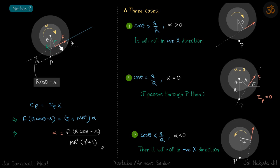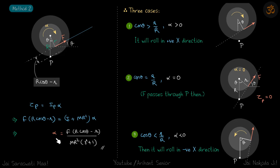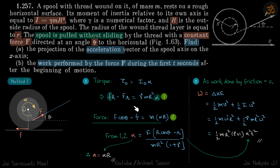Writing the torque equation about point P: force F is at angle theta. Extending the line of action, the perpendicular distance is R·cos(theta) minus small r. So: F·(R·cos(theta) − r) equals I_P·alpha, where I_P equals I plus m·R². In one line we get the value of alpha. To find friction as well, we would still need two equations.